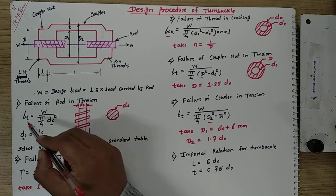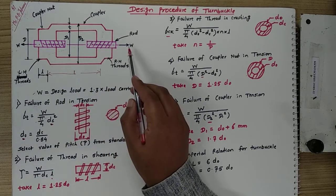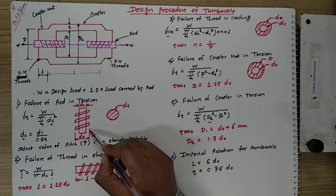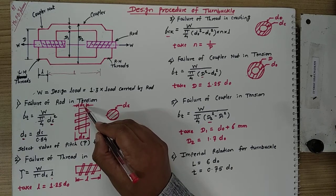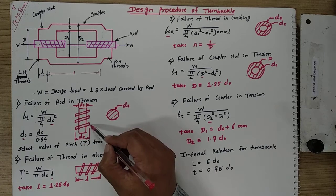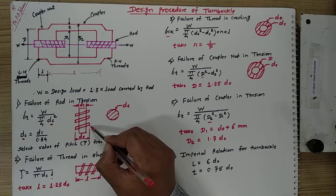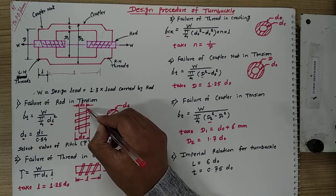The first step of design is failure of the rod in tension. This rod fails under tension whenever a tensile load acts on it. The cross section of the rod shows that the smallest dimension is DC, the core diameter of the screw, and the outer diameter is the nominal diameter represented by DO. Nominal diameter is the outer diameter of the threaded portion, and DC is the smallest diameter of the threaded portion.